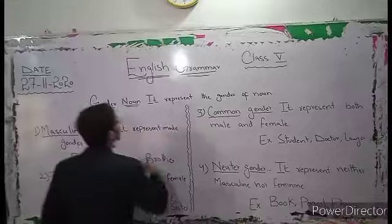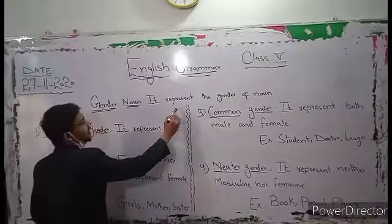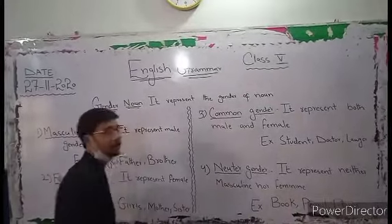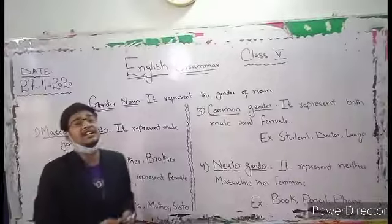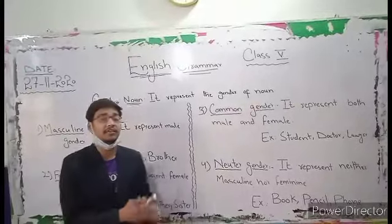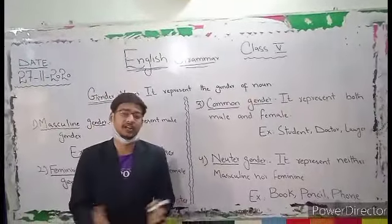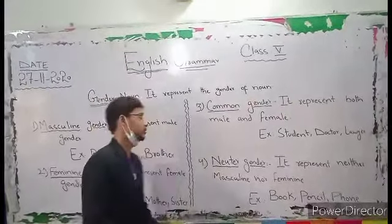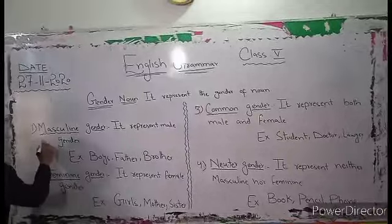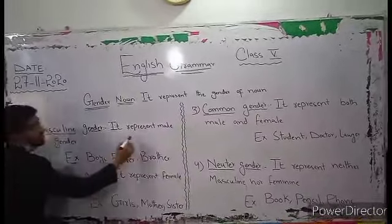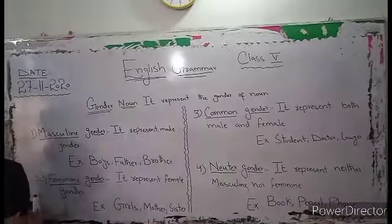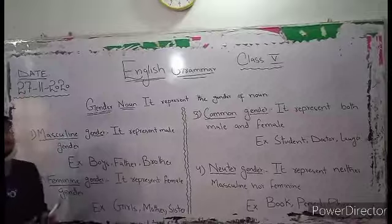Gender Noun represents the gender of a noun — male, female, or otherwise. The first type is Masculine Gender. It represents male gender.